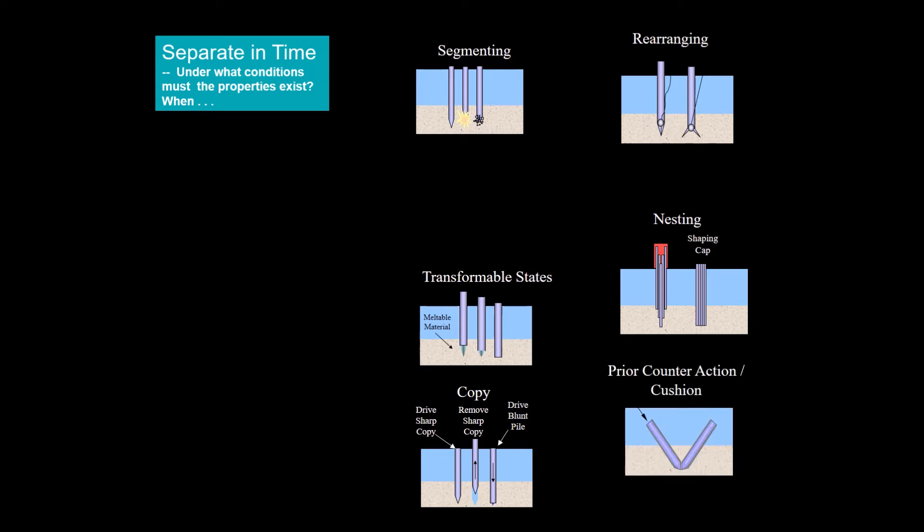With prior counteraction, we drive a pile in at an angle. A second pile is driven in until it hits the first pile, making it blunt.